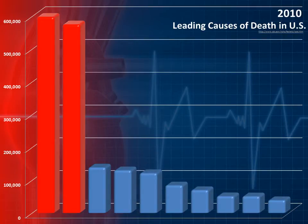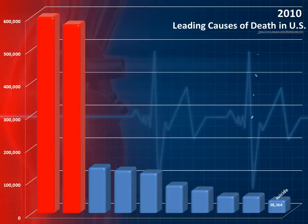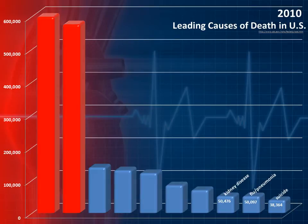Take a look at the leading causes of death in the United States in 2010. According to the Centers for Disease Control, 38,364 deaths were attributed to suicide. 50,097 deaths were due to flu and pneumonia. 50,476 died from kidney disease. 69,071 from diabetes.